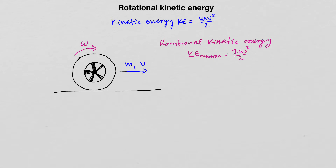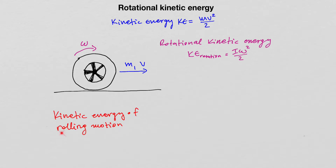As we discussed before, the moment of inertia for rotation is analogous to the mass for translation, and the angular velocity is analogous to the linear velocity. The kinetic energy of an object that is rolling — which means there is translational motion and rotational motion together — is defined as the kinetic energy of translation, mv squared divided by 2, plus the kinetic energy of rotation, I omega squared divided by 2.